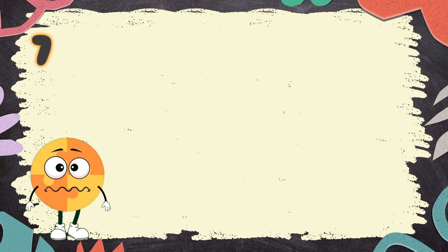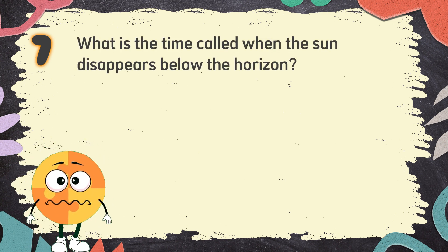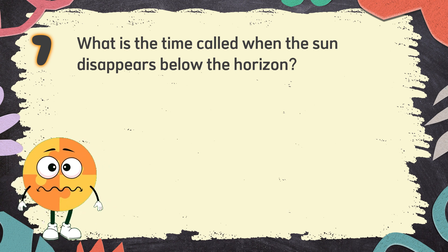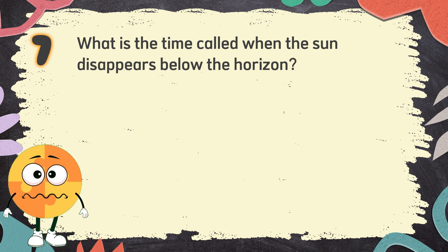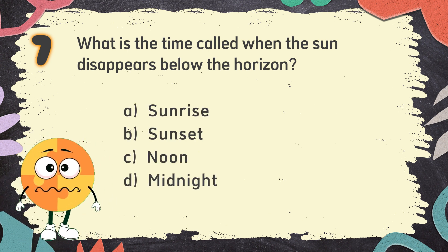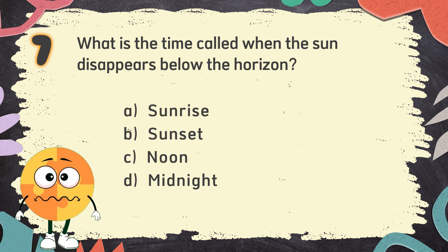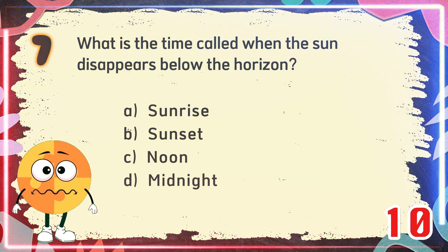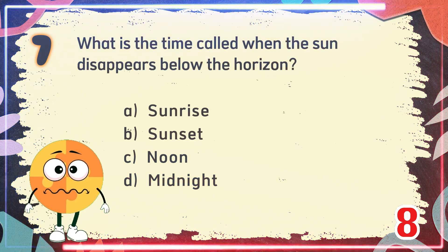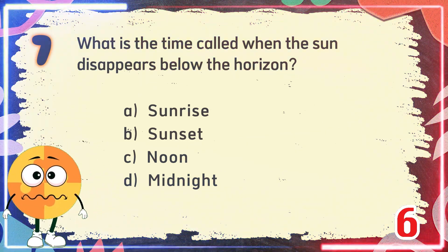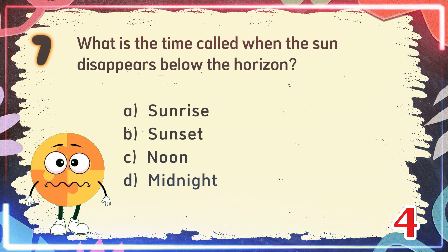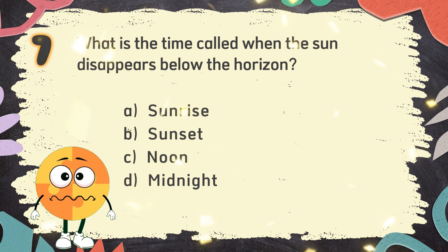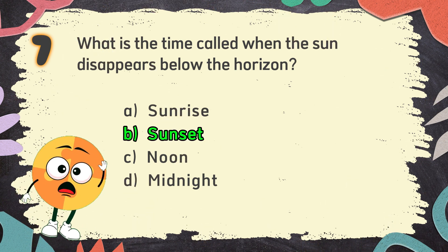Number 7: What is the time called when the sun disappears below the horizon? The choices are: A. Sunrise, B. Sunset, C. Noon, D. Midnight. The correct answer is B. Sunset.